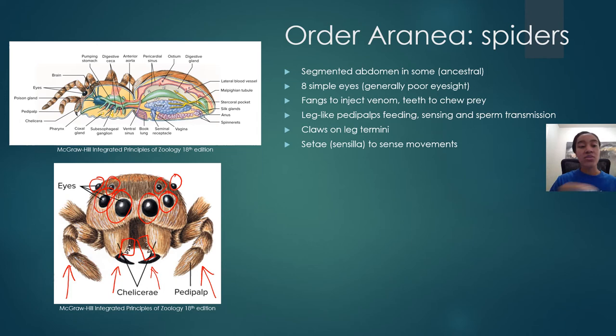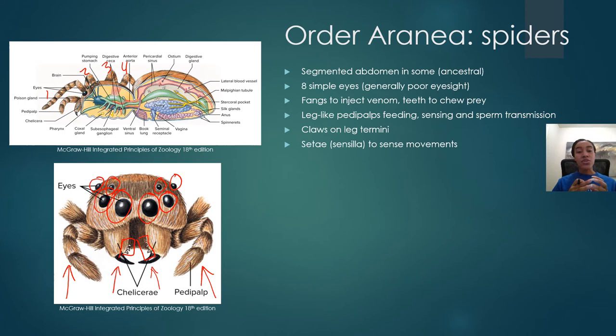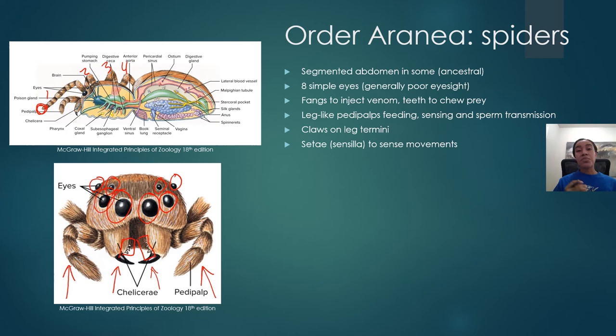Spiders have eight legs - four pairs. At the tips of their legs they have claws, and their legs are covered in setae, tiny hairs that help them sense movement in their environment such as changes in wind or vibration. This is especially important given that most spiders have poor eyesight. Their legs and other appendages are highly adapted for sensing and interacting with the environment.